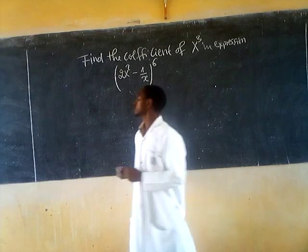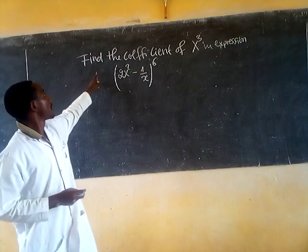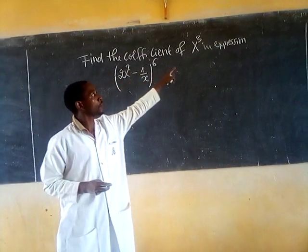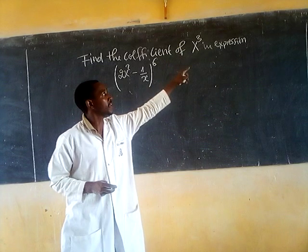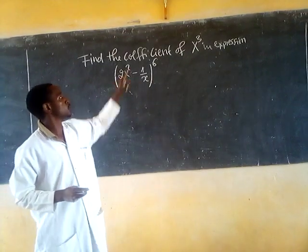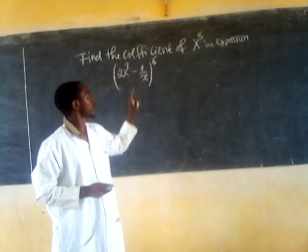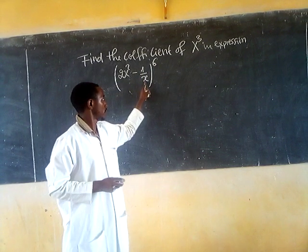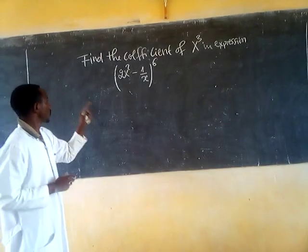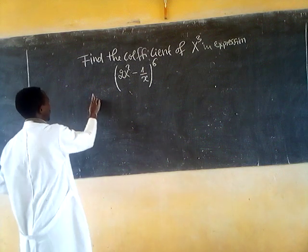Hello. So here is the equation. Find the coefficient of x power 3 in the expression (2x² - 1/x)^6. So how do we solve this?